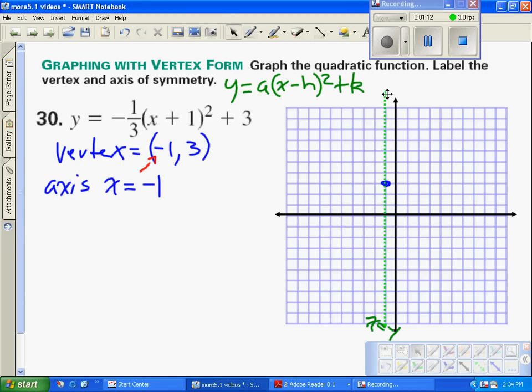From there we're going to use that a value again. Remember, a equals negative one-third. The negative means it's facing down, and that one-third acts like a slope—it's not a slope but it acts like it—and it comes down one-third over 1. You just plot those two points on both sides.